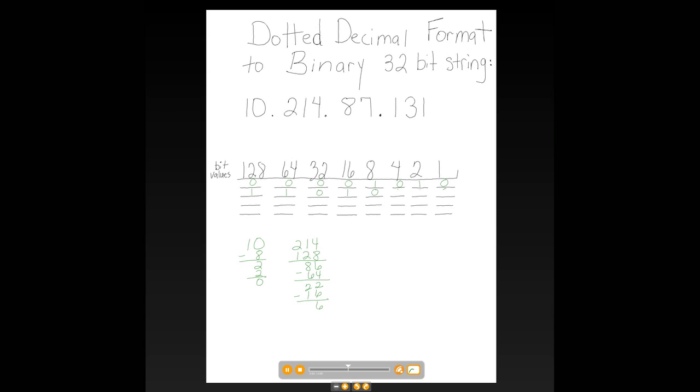So 8 would be turned off. 4 would be turned on, leaving us 2. So 2 would be turned on. That uses up all of our value, so the last bit would be turned off. So 128 plus 64 plus 16 plus 4 plus 2 equals 214.